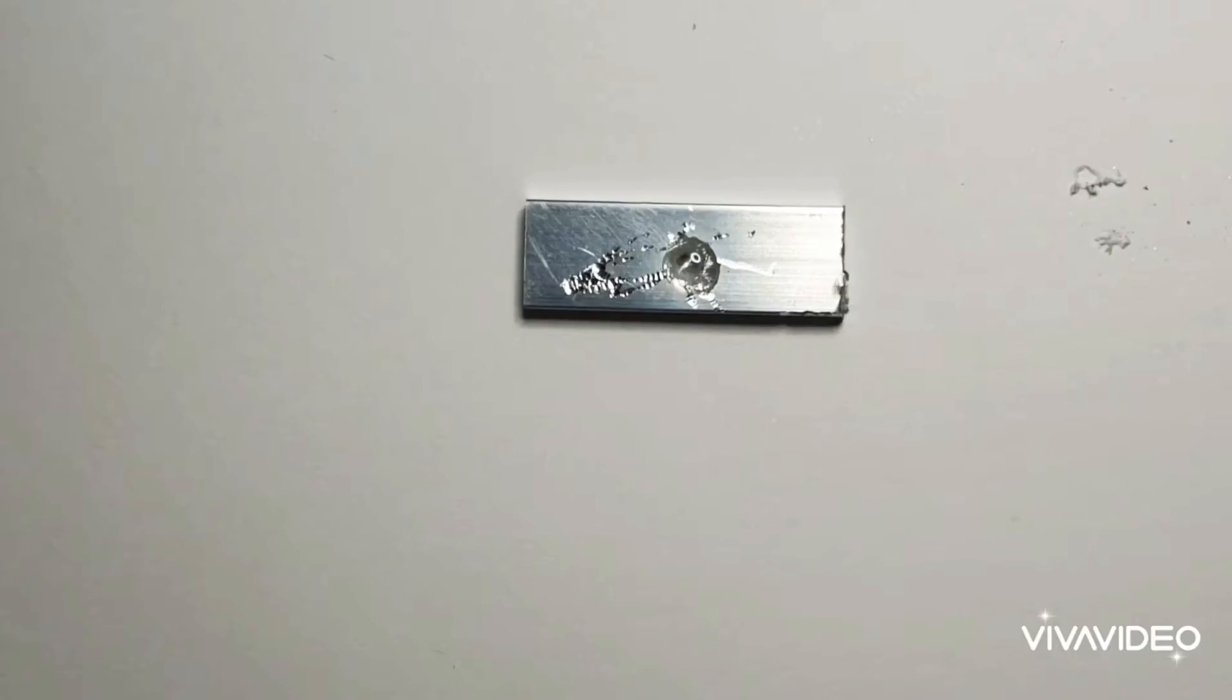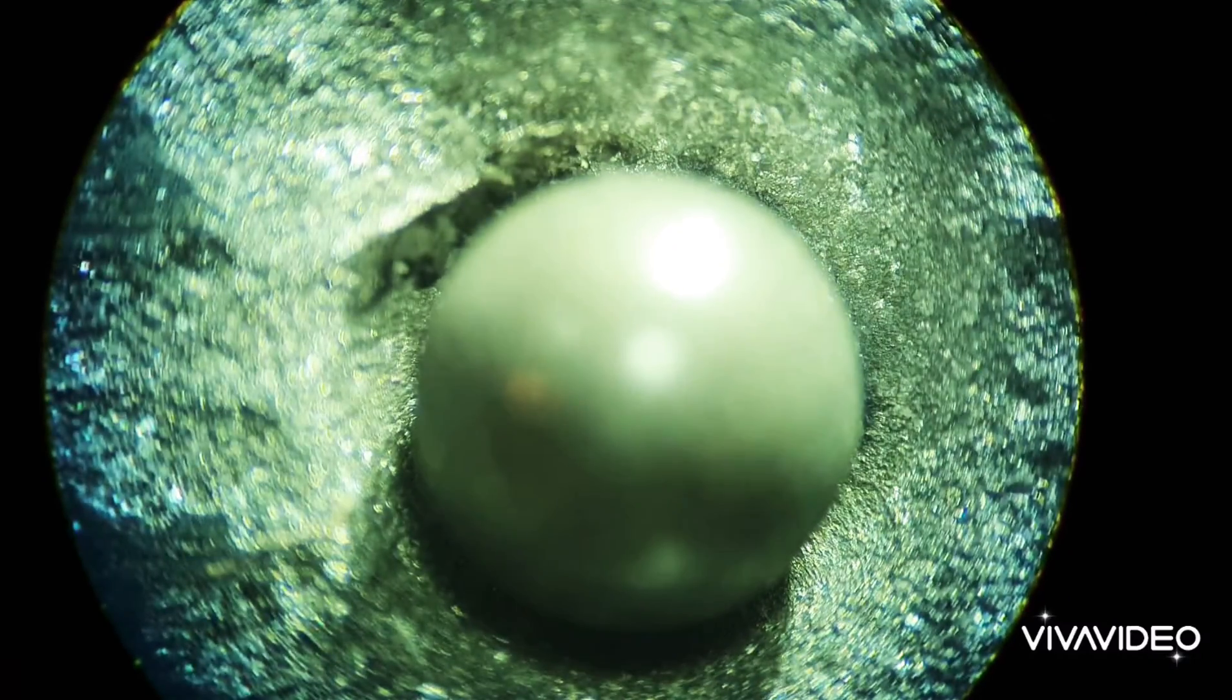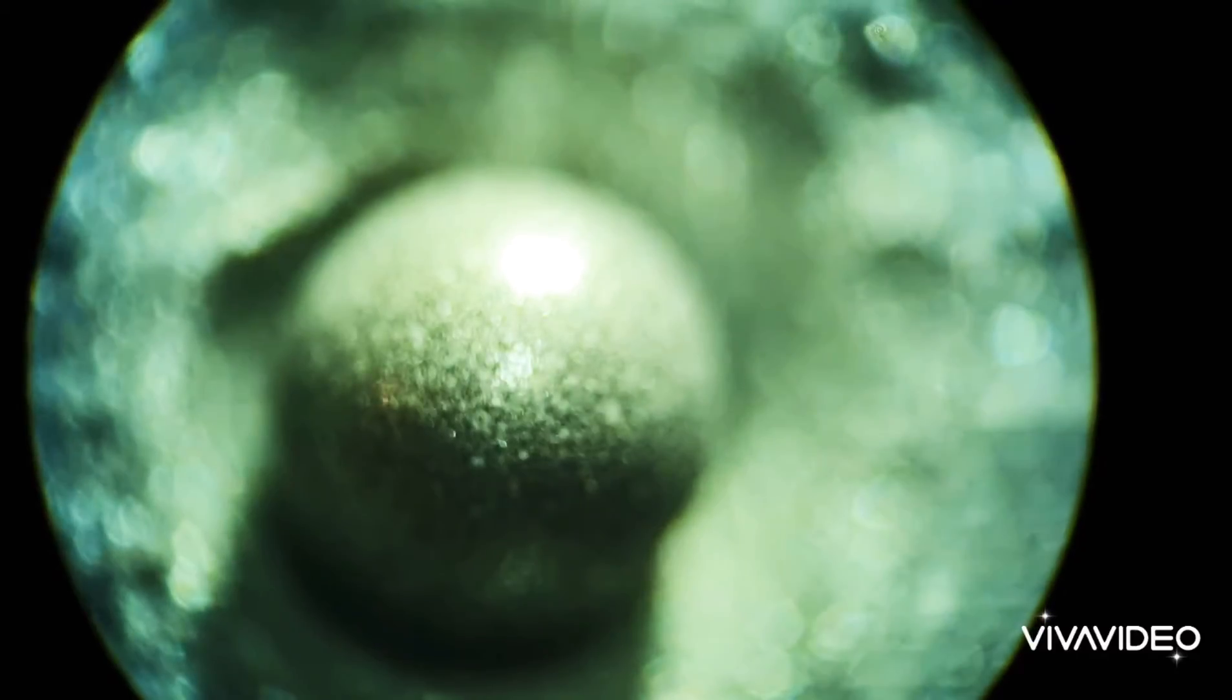The acid helps remove the oxidative layer that may have formed on any aluminium piece and once that's exposed you can then add the mercury.